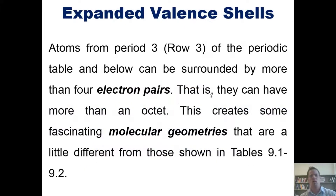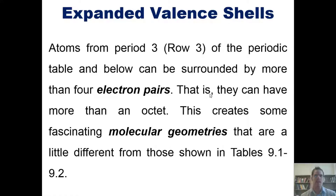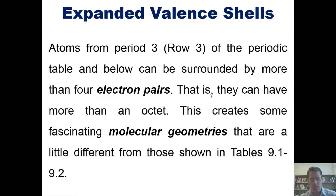Once you get down to row three of the periodic table and below, atoms can actually be surrounded by more than four electron pairs — in other words, they can have more than a full octet. The primary reason is that those atoms have d orbitals, some of which on row three are not occupied by electrons. This creates some very elegant and fascinating molecular geometries.